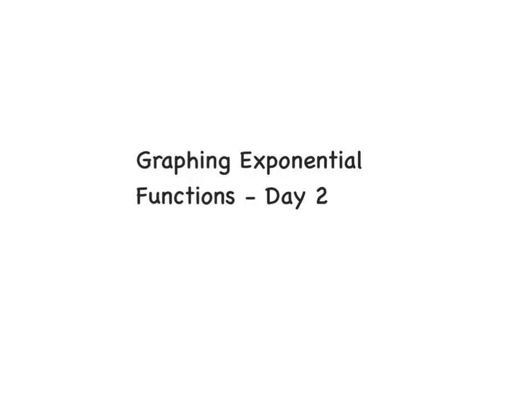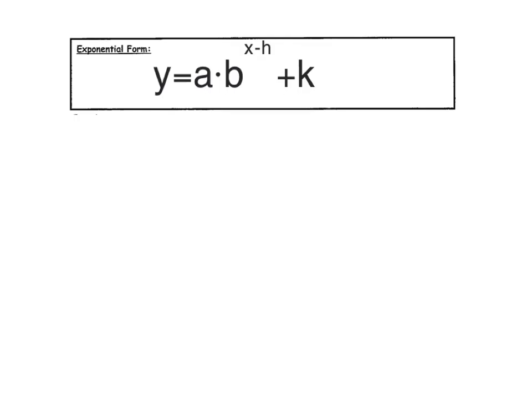The base was b and the exponent was x, where x is the number we plug in like negative 2, negative 1, 0, 1, or 2. Let's refresh: in the exponential form, write in this formula. A reminder that a is the y-intercept.